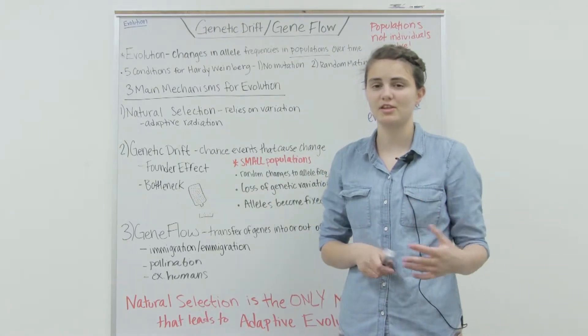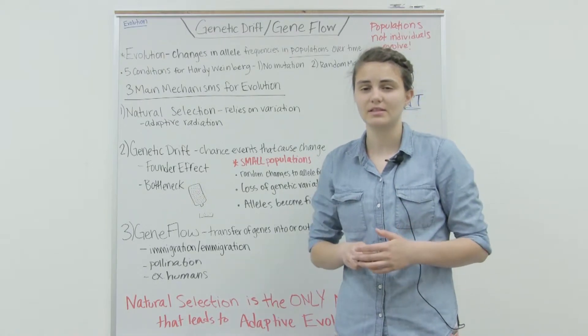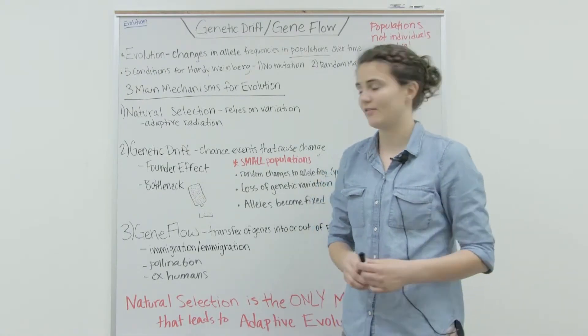The bottleneck effect is basically when we have some chance events such as a flood or a fire that removes a large number of the population, and as a result some alleles may be lost or greatly changed in the amount they had.